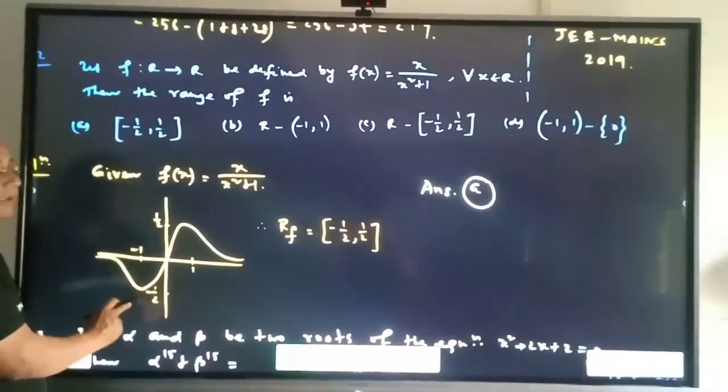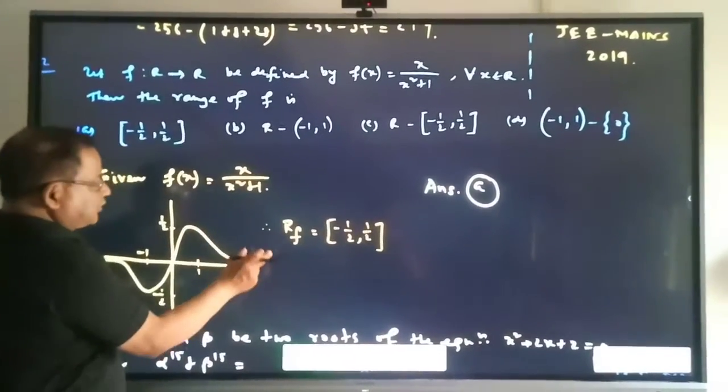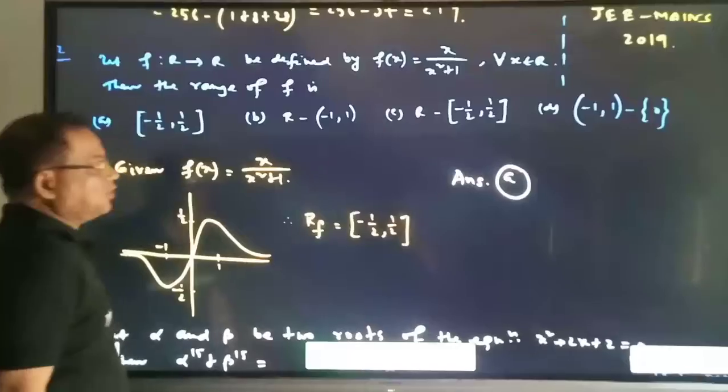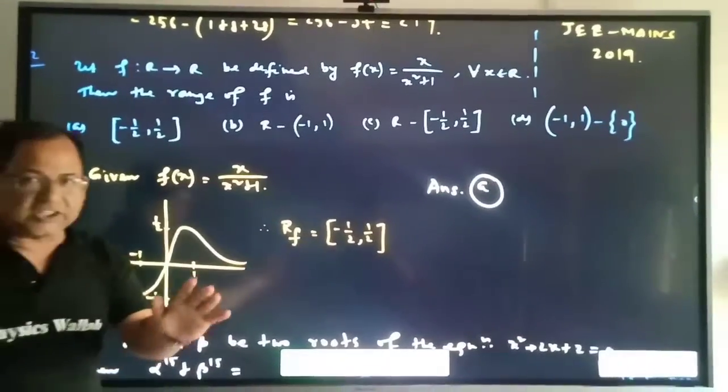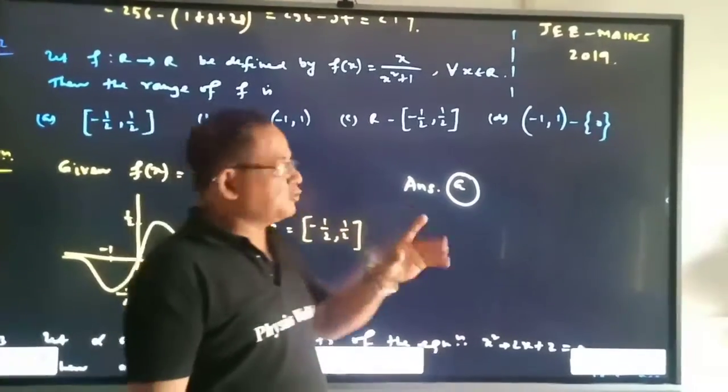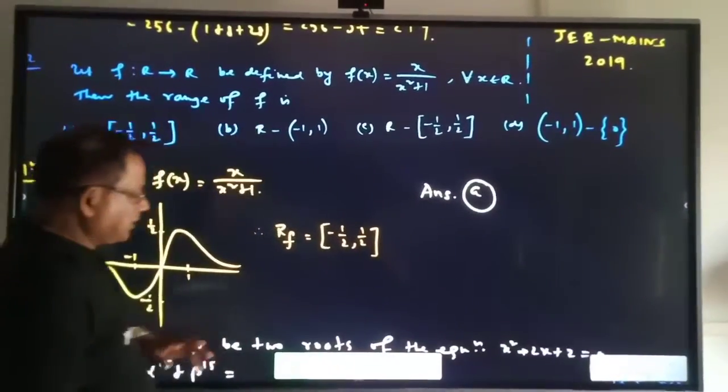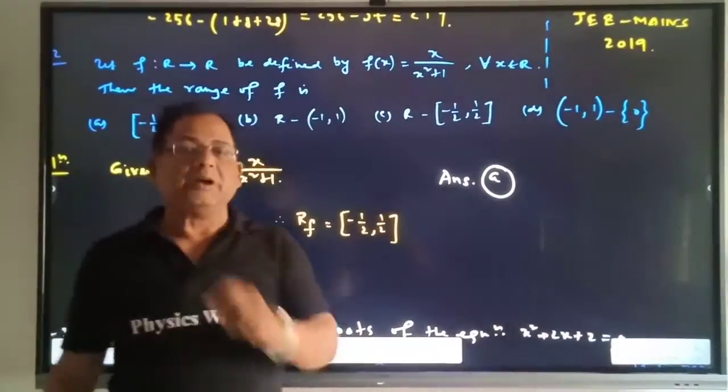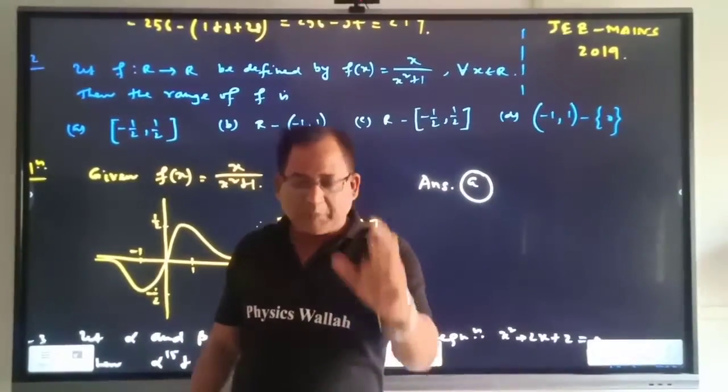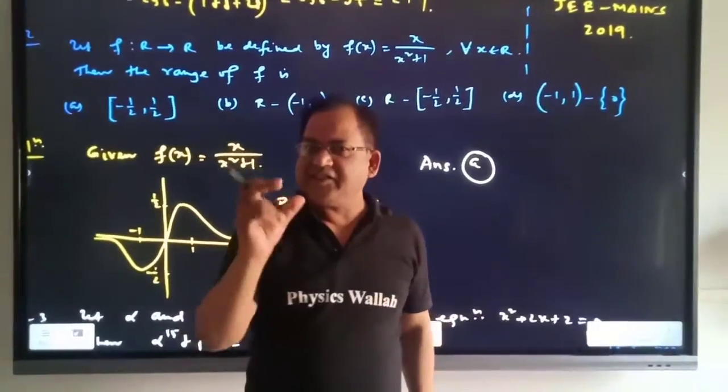So by definition, the range is minus half to plus half. That is, option A is the right choice. My dear friends, perfect practice makes you perfect.